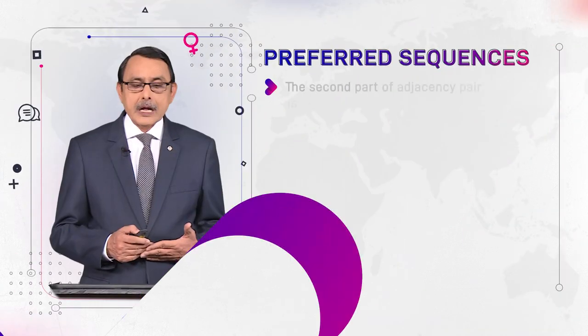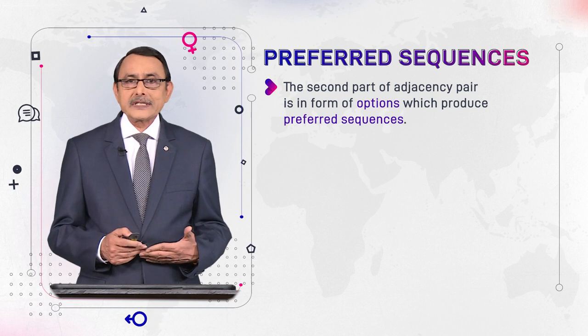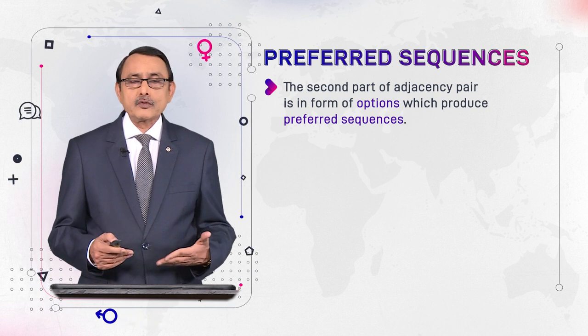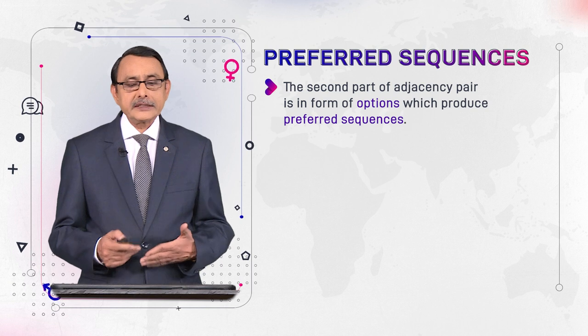Here, preference or preferred never refers to our own desire, our own will, or our own decision for choosing something. It is not that sense of the word here. By preference we mean that something is conventionally preferred. The second part of an adjacency pair is in the form of options — two options. The first option that is conventionally expected is preferred, and the other is dispreferred.